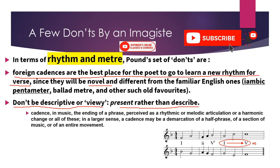What is a cadence? In music, it is the ending of a phrase perceived as a rhythmic or melodic articulation or a harmonic change. In poetry, every line should not come to a full stop — unlike prose where each sentence ends. One line carries forward into another; it is just the rise and fall of rhythm.